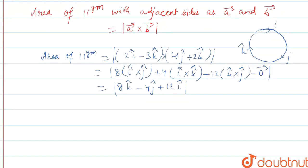So, we can write here now modulus of this one as 8 square minus 4 square plus 12 square. So, we have got 64 plus 16 plus 144, root 224. Thank you.